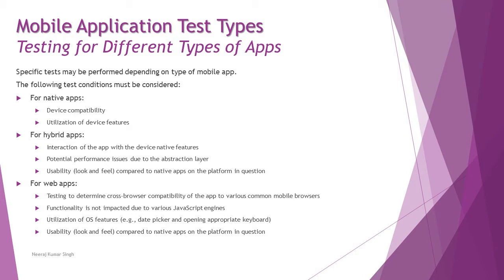There are specific test conditions to be designed in order to test each app type. For native apps, the first condition is device compatibility — not all apps are compatible with all devices. Whatever devices you are targeting must be considered to meet compatibility requirements.